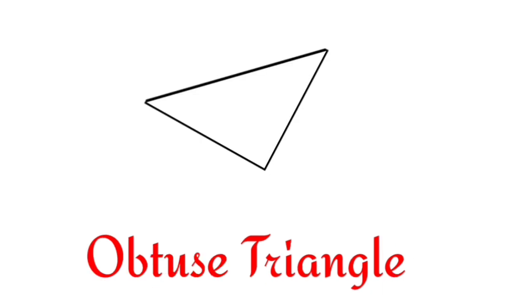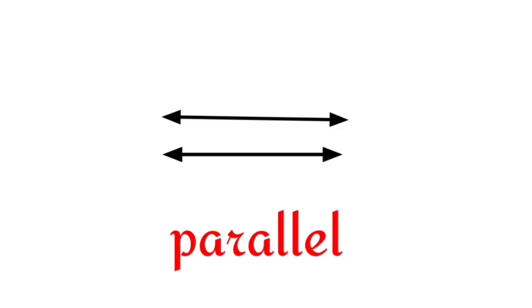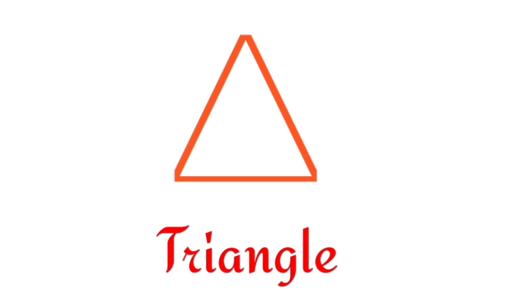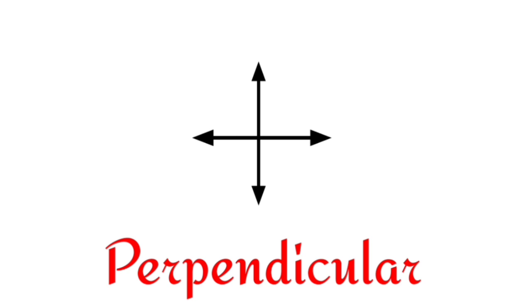Obtuse triangle. O-B-T-U-S-E T-R-I-A-N-G-L-E. Obtuse triangle. Parallel. P-A-R-A-L-L-E-L. Parallel. Isosceles. I-S-O-S-C-E-L-E-S. Isosceles. Triangle. T-R-I-A-N-G-L-E. Perpendicular. P-E-R-P-E-N-D-I-C-U-L-A-R. Perpendicular.